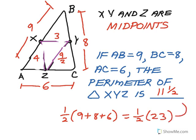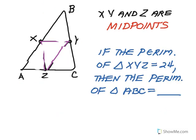Lastly, with the same diagram, if the perimeter of the smaller triangle xyz is 24, what's the perimeter of the big triangle abc? Since bc is twice xz, ac is twice xy, and ab is twice zy, the whole perimeter of abc is twice the perimeter of triangle xyz. So abc would have a perimeter of 48.